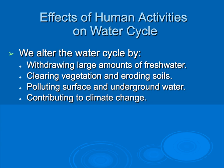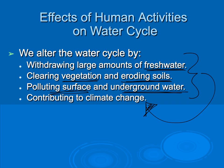There are many ways human activities alter the water cycle. We withdraw large amounts of fresh water from aquifers. We also clear vegetation, which reduces transpiration and increases soil erosion. We pollute our water and underground water sources, all of which can contribute to changes in our climate.